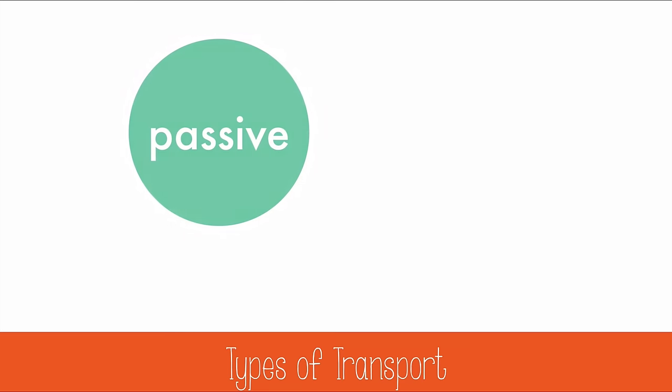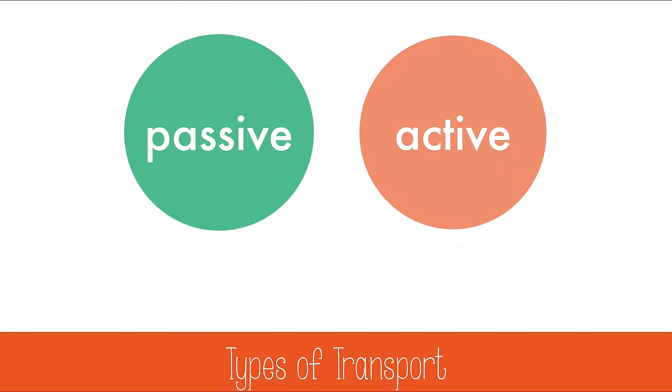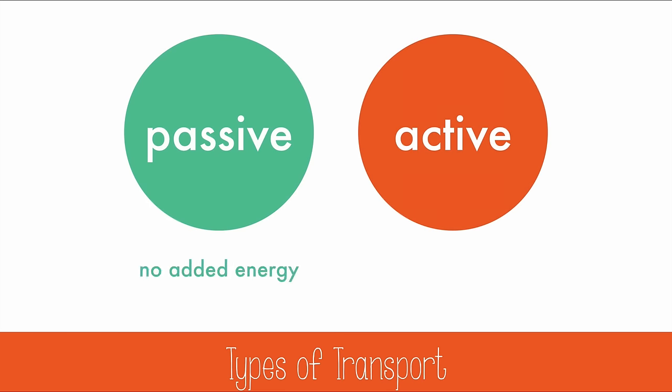Recall that there are two types of cellular transport: passive and active. Passive requires no added energy, but active does require added energy.